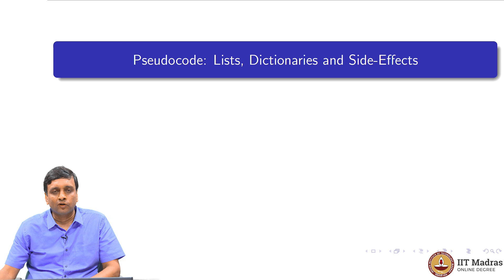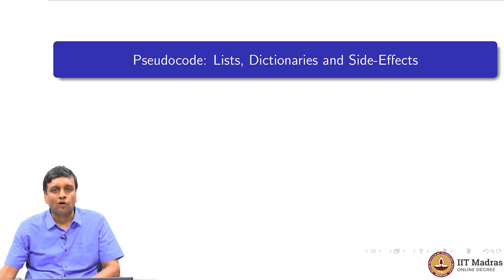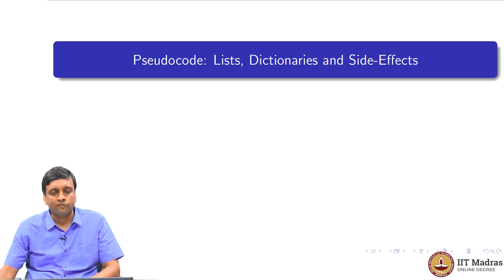When we introduced procedures, we talked about the issue of side effects in the context of cards or tables. When we pass a stack of cards or a table to a procedure, inside the procedure there may be changes to that table or stack of cards which are reflected outside. This change, which may or may not be intended, is called a side effect. Now that we are dealing with lists and dictionaries, we need to be aware of this problem and make a conscious decision whether we are going to use side effects or not.